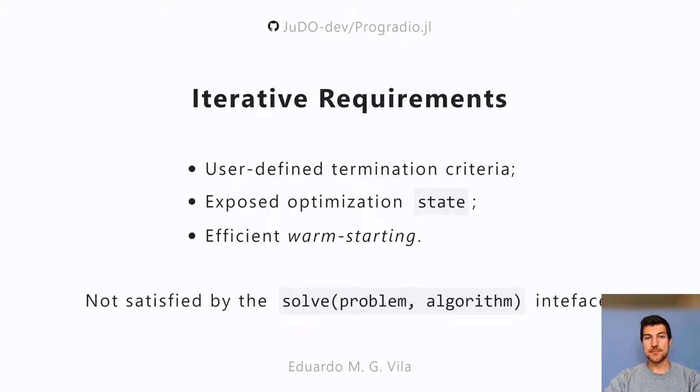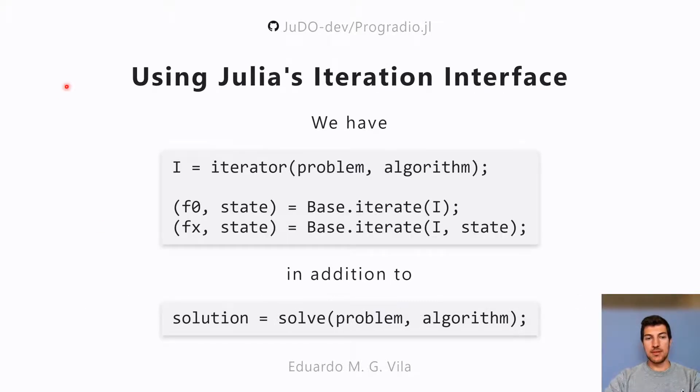The solution was simply to use Julia's iterator interface. This is baked into Julia. We can just create an iterator, in our case we've created this iterator function in which we give a problem and an algorithm. With this iterator we can simply call base.iterate on it and it would give us the state and the cost at each iteration, and we can simply solve problems and check its progress along the way.